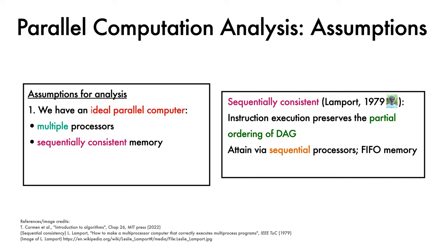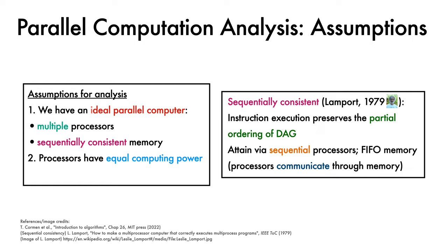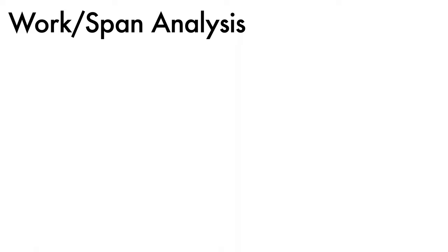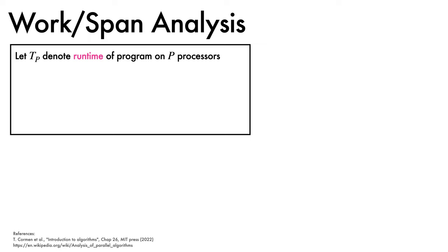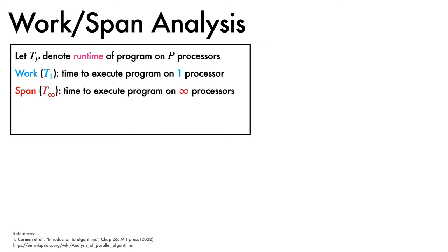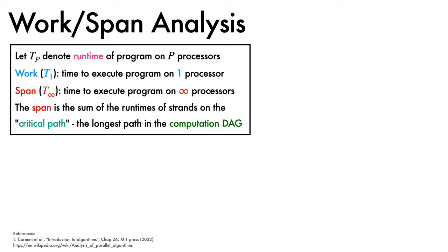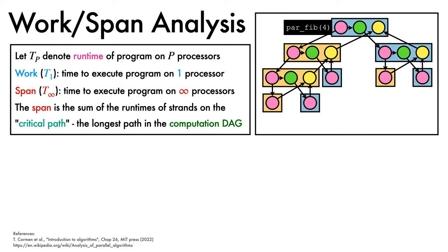Analysing parallel computation requires some assumptions: an ideal parallel computer with multiple processors and sequentially consistent memory — a term introduced by Leslie Lamport in 1979, meaning instruction execution faithfully preserves the partial ordering of the DAG. We also assume processors have equal computing power and there is no overhead for scheduling. We let T_P denote the runtime on P processors. We define the work, T_1, as the time to execute on one processor, and the span, T_∞, as the time to execute on an infinite number of processors — equal to the sum of runtimes on the critical path, the longest path in the DAG.